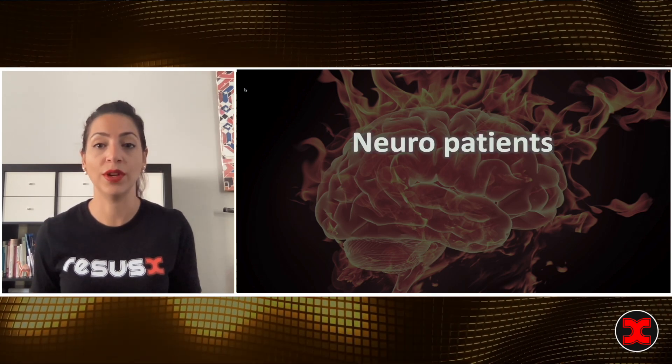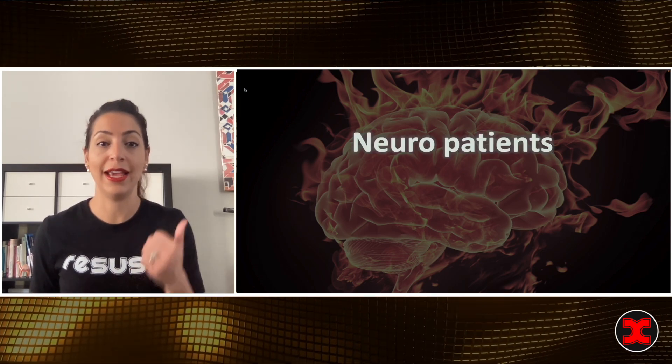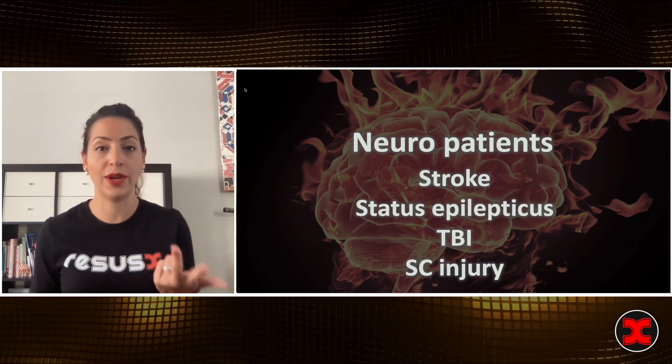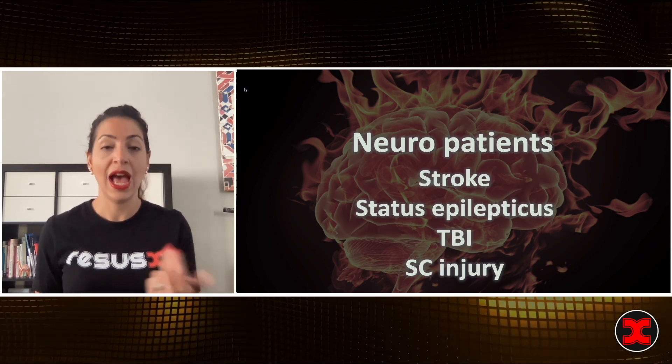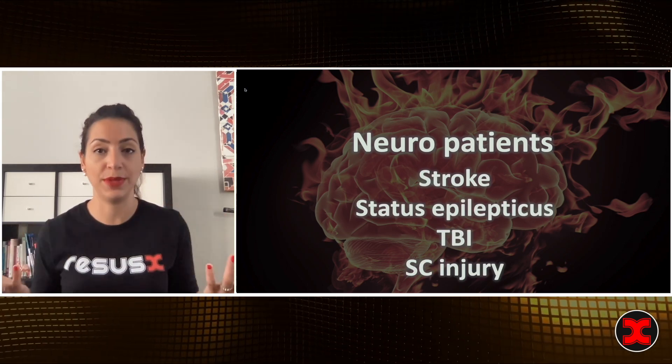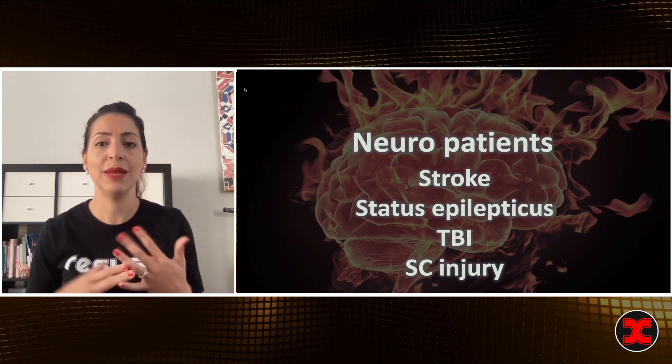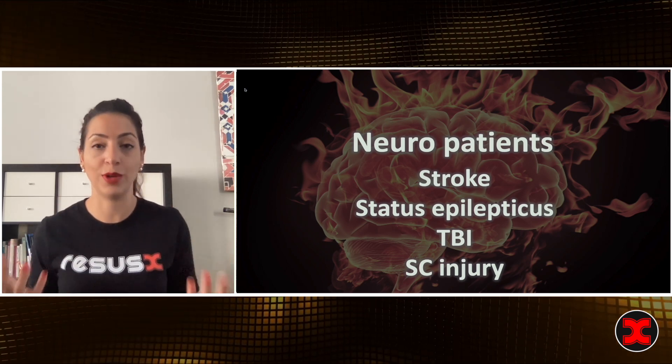Let's start with first things first. Who is this neuropatient I'm referencing? When I say neuropatient, I'm talking about a patient who's having a stroke — whether ischemic stroke, a hemorrhagic stroke, or subarachnoid hemorrhage. I'm also talking about patients with status epilepticus, patients with traumatic brain injuries, and patients with spinal cord injuries.